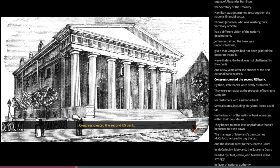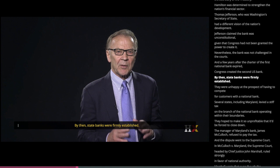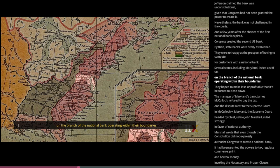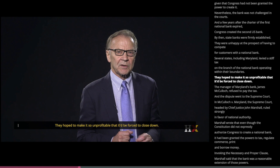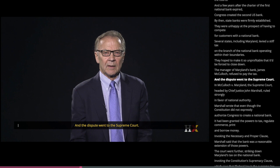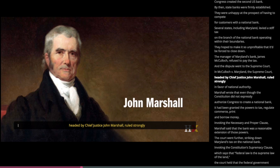By then, state banks were firmly established and unhappy at the prospect of competing for customers with the national bank. Several states, including Maryland, levied a stiff tax on the branch of the national bank operating within their boundaries, hoping to make it so unprofitable it would be forced to close down. The manager of Maryland's bank branch, James McCulloch, refused to pay the tax, and the dispute went to the Supreme Court. In McCulloch v. Maryland, the Supreme Court, headed by Chief Justice John Marshall, ruled strongly in favor of national authority.